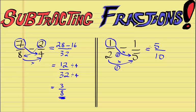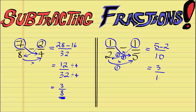We carry over our subtraction sign, and then we go ahead and multiply the numerator of the second fraction by the denominator of the first fraction — that's the third step. So 1 times 2 is 2. We then take away the numerators: 5 minus 2 is 3. And we keep our original denominator 10. So 3/10. Remember, if you do get an improper fraction, change it into a mixed fraction or mixed number. The link for how to change improper fractions to mixed numbers is in the description below.